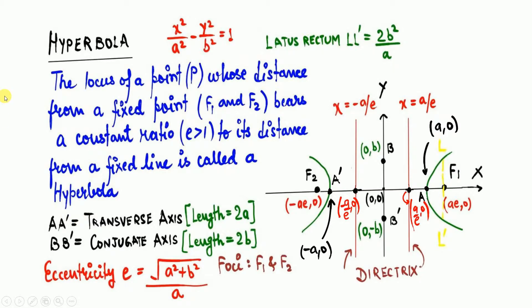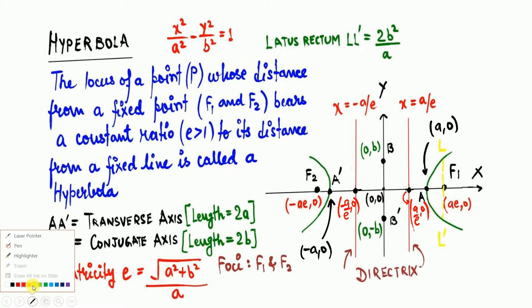First I will define what a hyperbola is, as we have already defined parabola and ellipse in the previous video. Similarly, we will be defining hyperbola in terms of locus. Before defining, just see what a hyperbola is — see this diagram. These two green curves, the right green curve and the left green curve, are called your hyperbola.